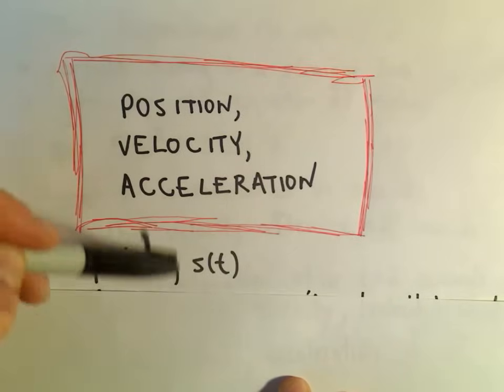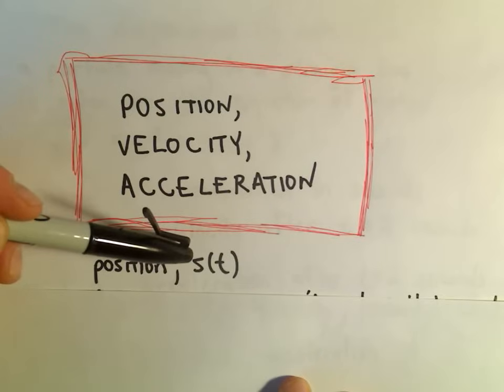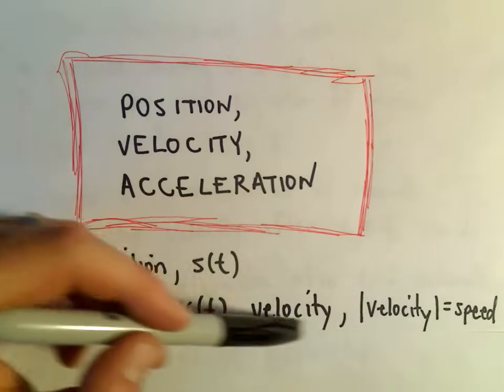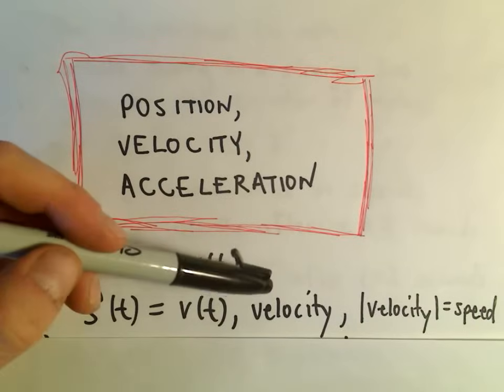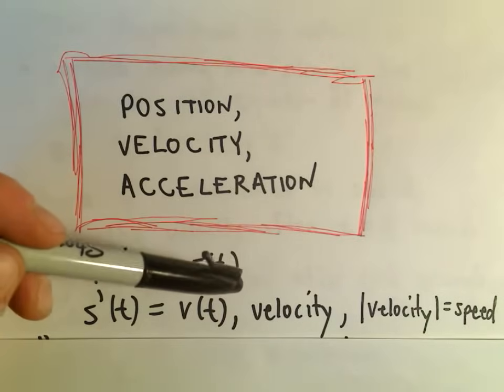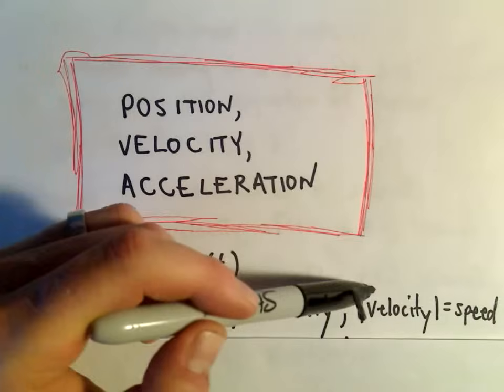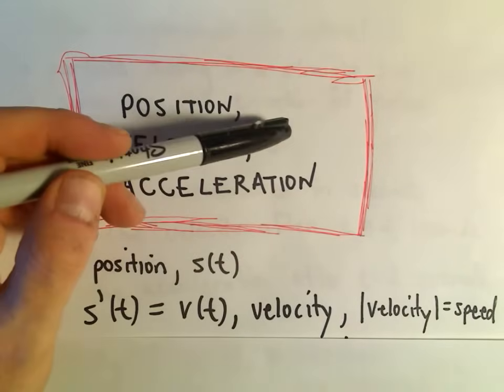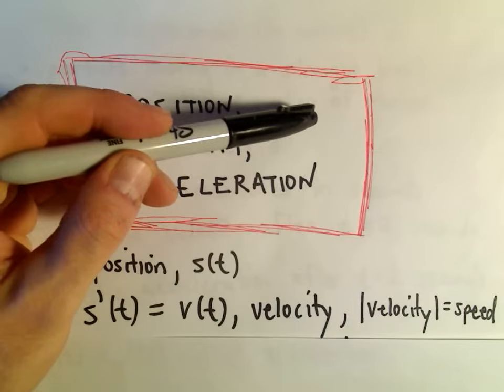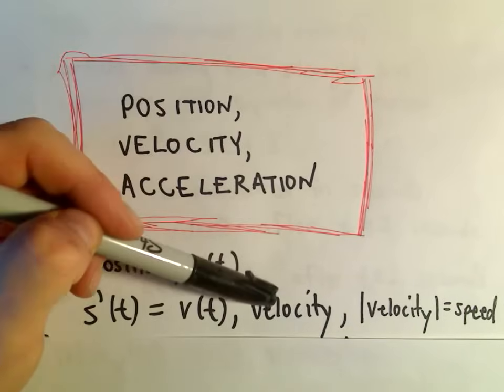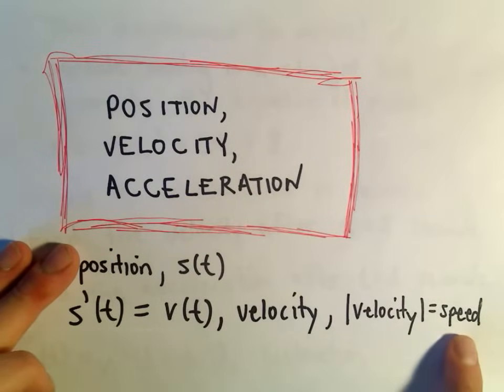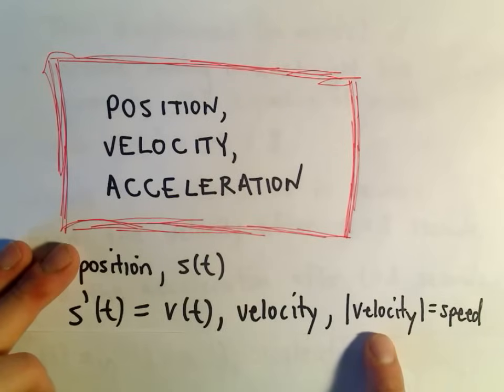A lot of times they'll abbreviate position with s of t. So you've got some function, s of t, that describes your position. If you take the derivative of that function, that's going to give you a new function that tells you about velocity. And velocity is going to have a sign associated with it, either positive or negative. You can think about the sign as saying, well, maybe either you're moving to the left if it's negative, or to the right if it's positive. Or maybe you're moving away if it's positive, and back towards... Maybe you leave your home. If your velocity is positive, that indicates you're moving away from home. If your velocity is negative, it indicates you're coming back. To get speed, speed is always positive. So all we really have to do is just take the absolute value of velocity to get our speed.